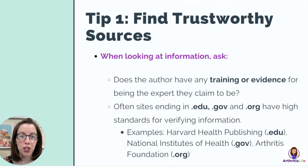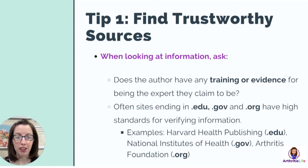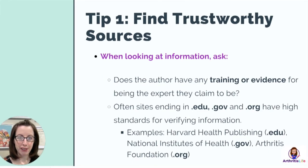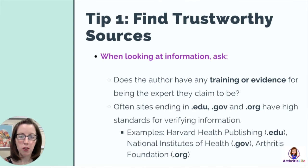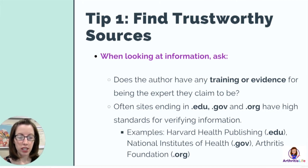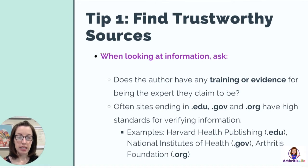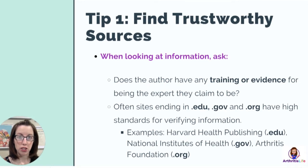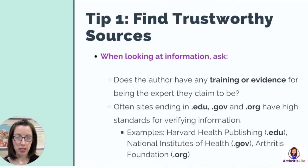My first tip is finding trustworthy sources of information. This sounds obvious, but it's very common in the beginning to go down what I call rabbit holes — you start on one valid website, then keep clicking and clicking until you're on something way off the rails in terms of validity. When you look at information about your disease, first check: does the author of the website, article, or book have any training or evidence for actually being the expert they claim to be?